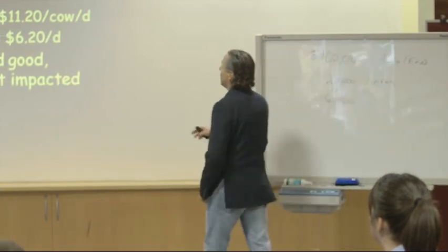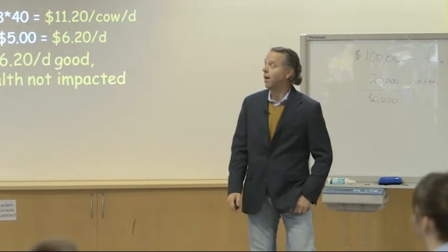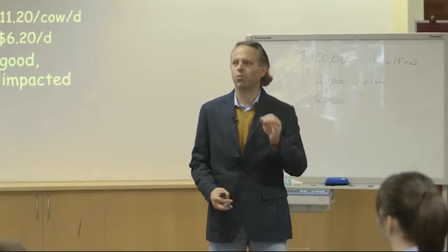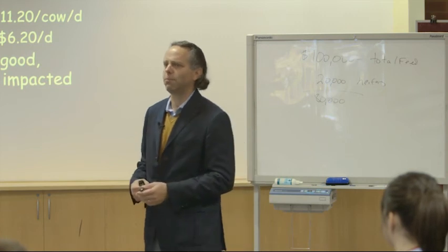Income over feed costs — let's hit this one more time. The math is very easy: we get the milk a cow produces, the milk price, the feed cost, and that margin in between is what we're after. That margin you ought to calculate every day or every month on your dairy. But what's the problem of this as a metric month after month? If we calculate the actual income over feed cost and you say in June 2014 my income over feed cost was a dollar per day better than June 2013 — what are the possible reasons why it might be better?